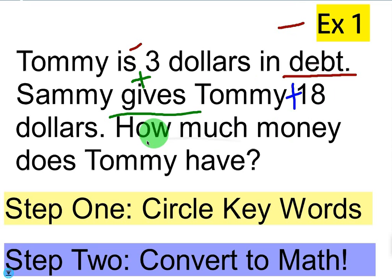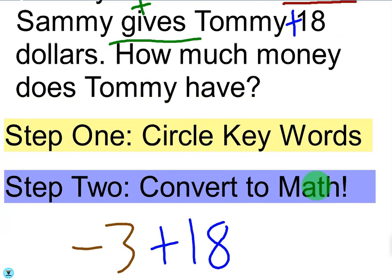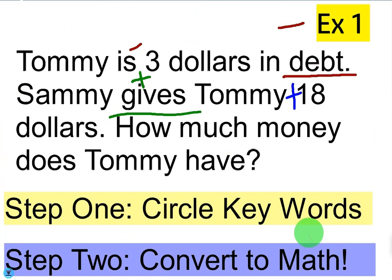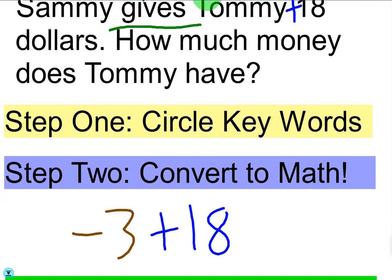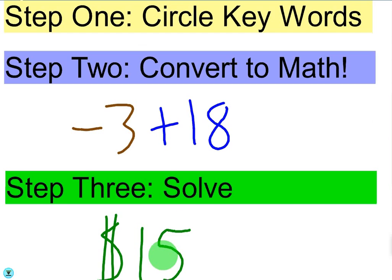How much money does Tommy have now? That leads us to the next step: convert what we've just read to math. Since we put a negative around 3, we write negative 3, and since he received $18 from Sammy, that's plus 18. Negative 3 plus 18 is the same as 18 minus 3, which is 15. So the answer is $15.